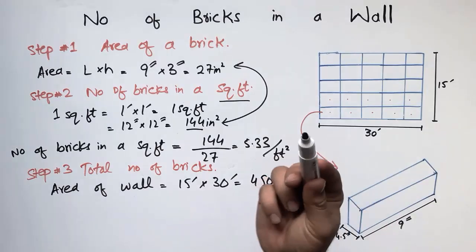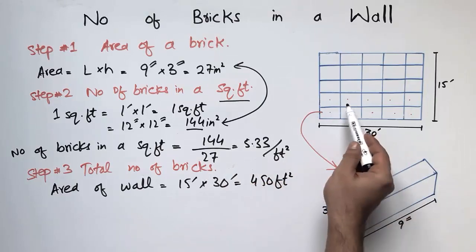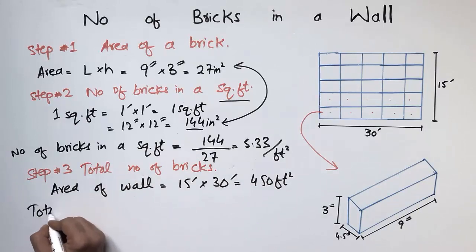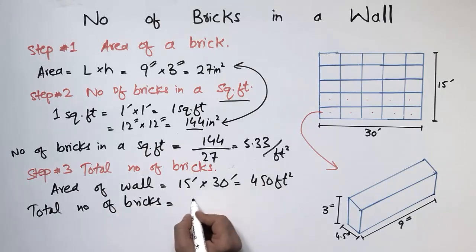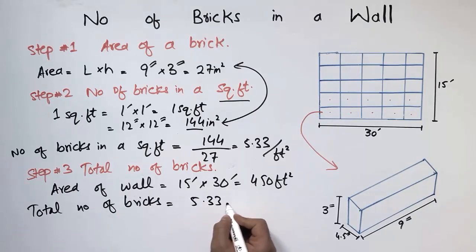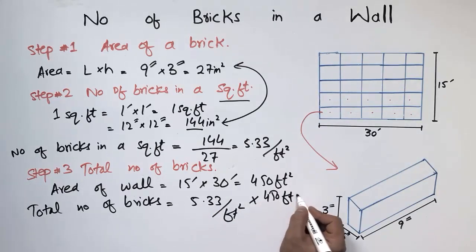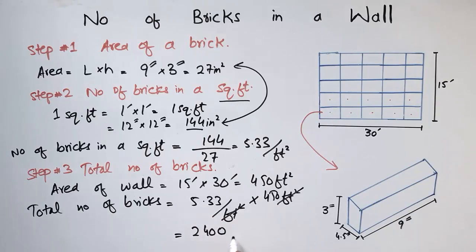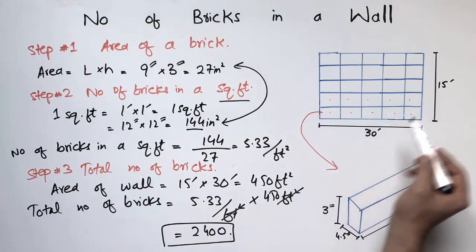As we know, in one square foot we have 5.33 bricks. So for the total wall area of 450 square feet, the total number of bricks is 5.33 multiplied by 450, which gives us 2400 bricks. These are the total number of bricks in a wall with dimensions of 30 feet by 15 feet.